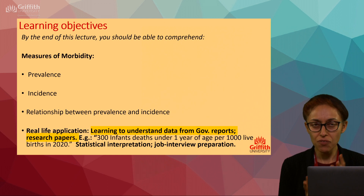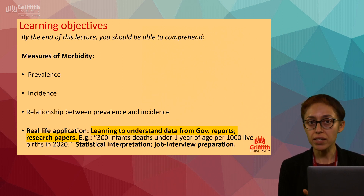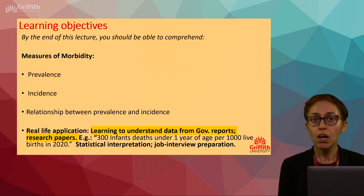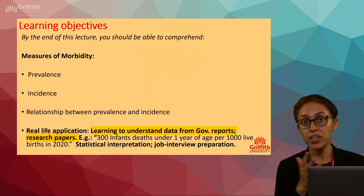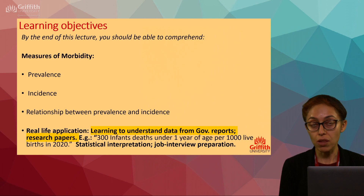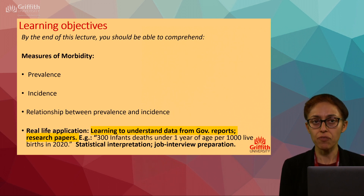This information is important because it will help you understand how to interpret research articles and governmental reports. For instance, if you encounter a statement like '300 infant deaths under one year of age per thousand live births in 2020,' you need to know what that means.